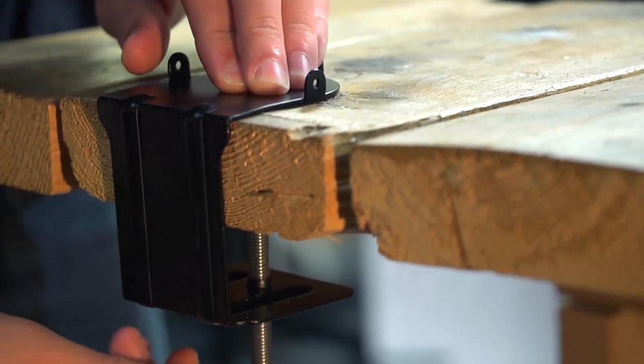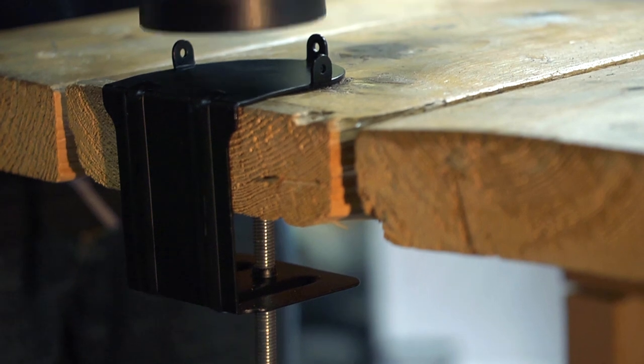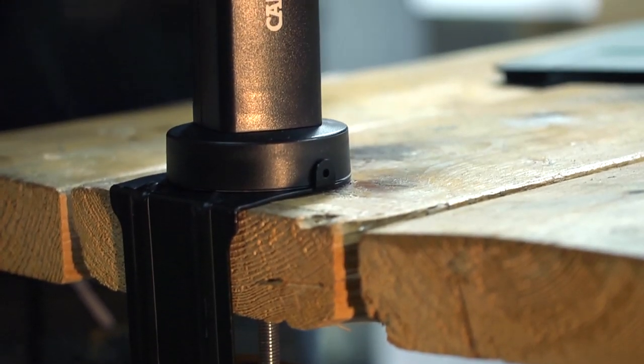The Magnaflex also works great with the included table clamp. This device allows you to place the Magnaflex in workspaces that might not have enough room to fit the entire base plate.